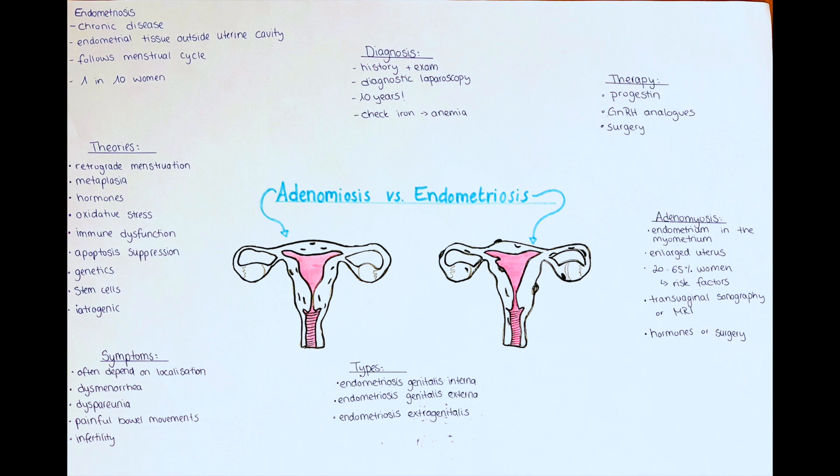Endometriosis is a chronic disease in which endometrial tissue is found outside the uterine cavity. This tissue, as the endometrial tissue within the uterine cavity, undergoes changes throughout the menstrual cycle depending on the changes of the hormones. Nowadays it is thought that one in ten women is affected by endometriosis.